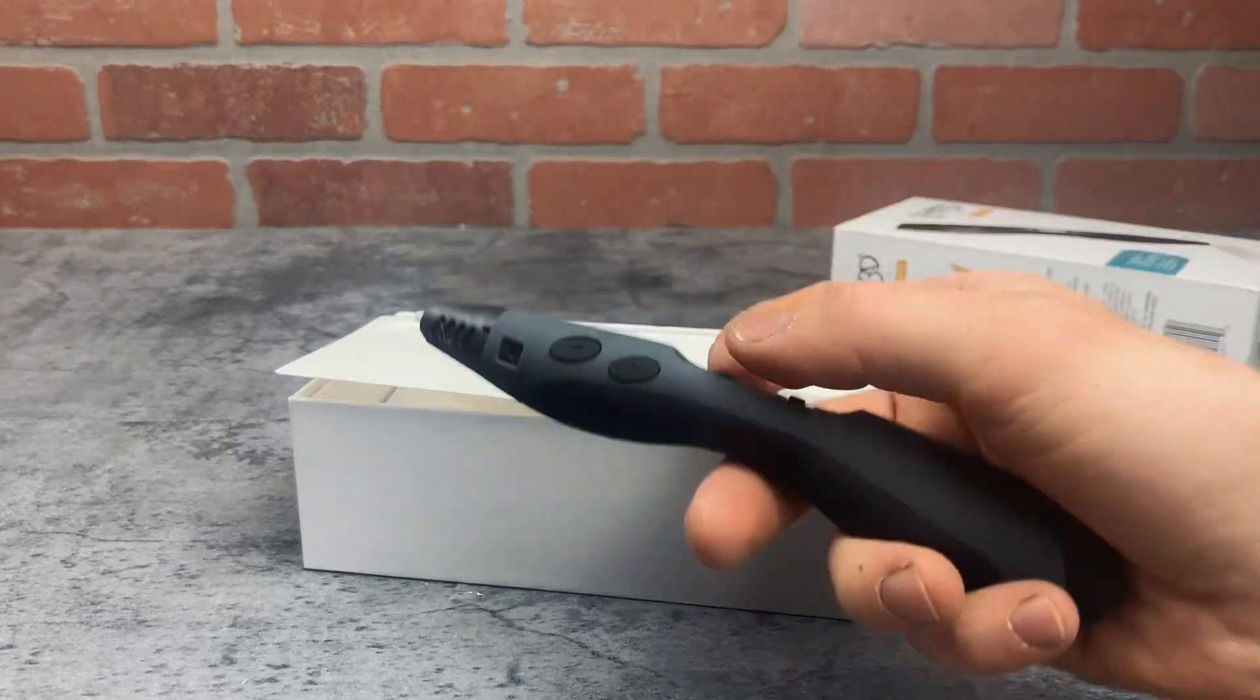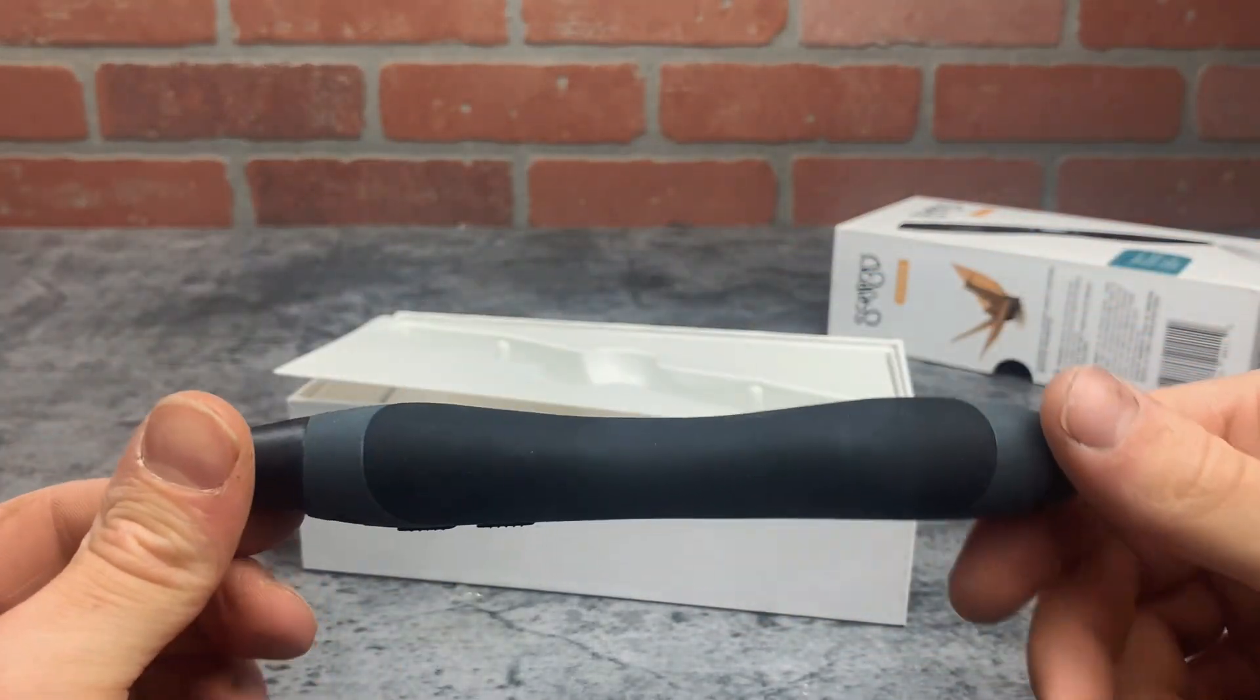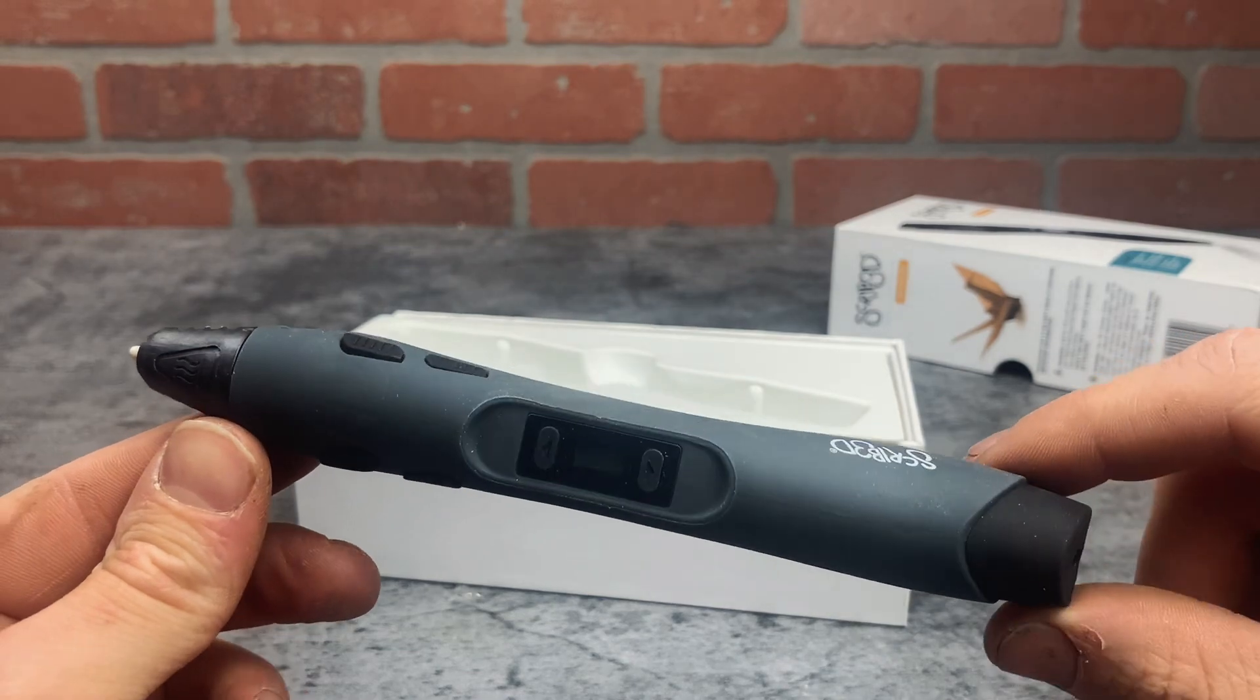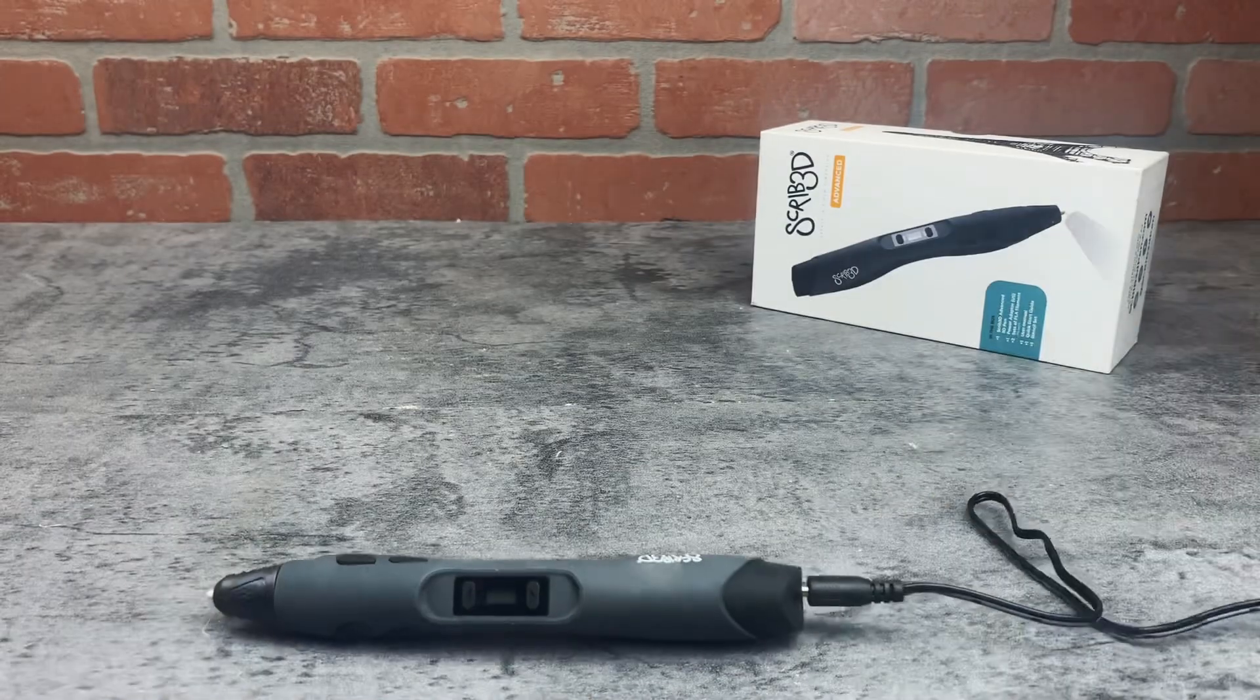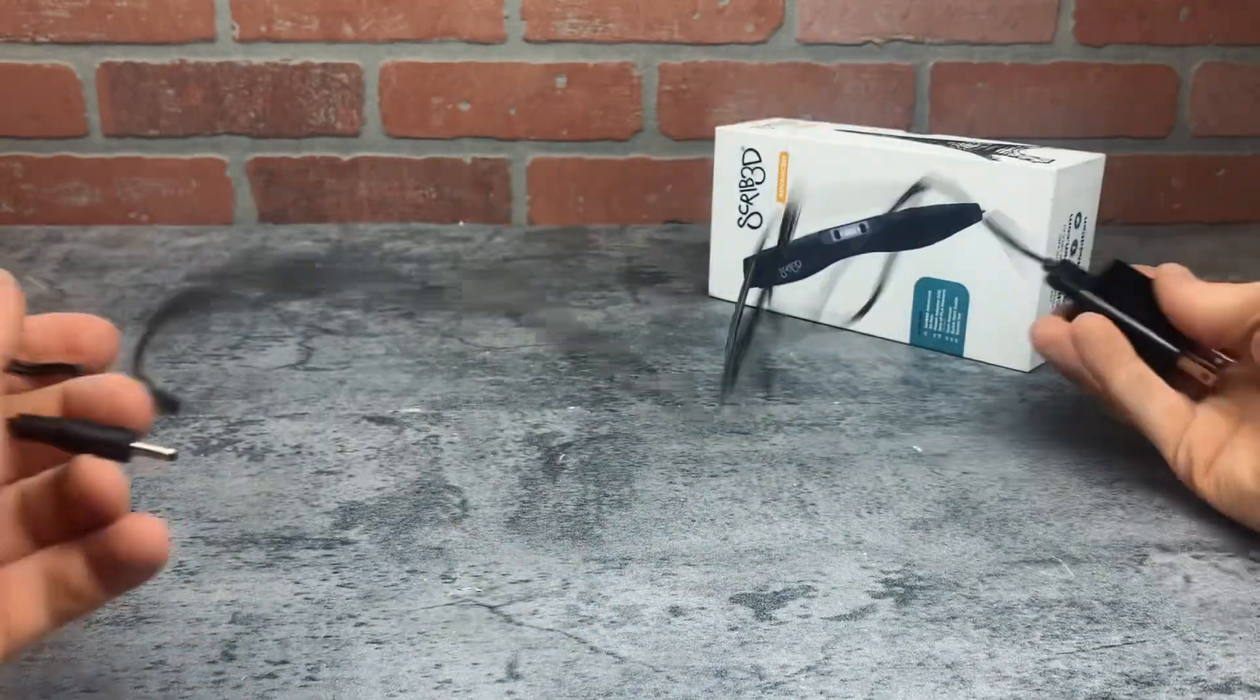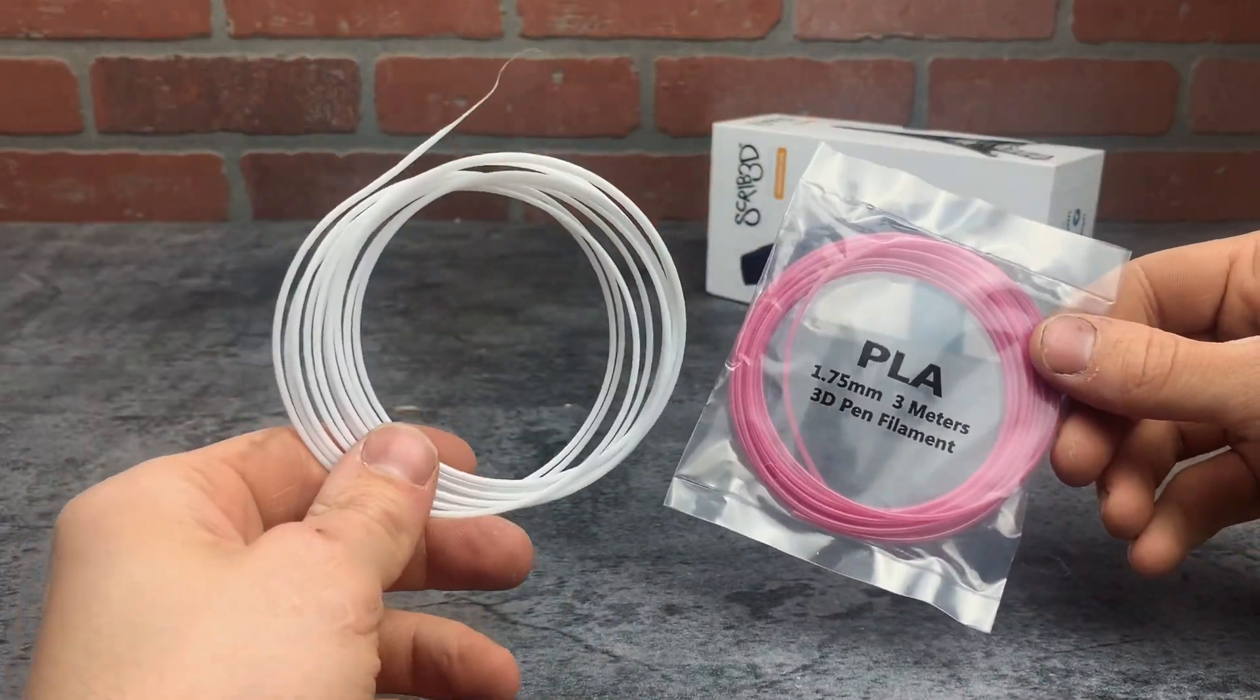Hey everyone, this is just a quick look at this Scribe 3D Advanced Printing Pen. This pen is a great price for what you get and it's super fun to use. It needs to be plugged in while in use because it doesn't have a battery. It comes with a cord, two 10-foot rolls of PLA material, and these practice sheets.